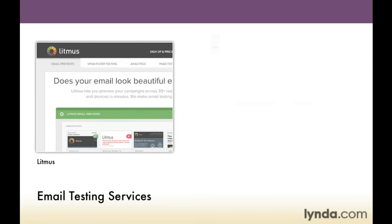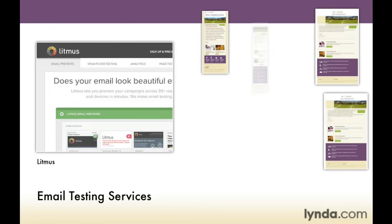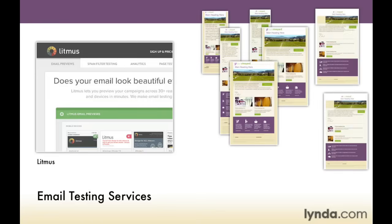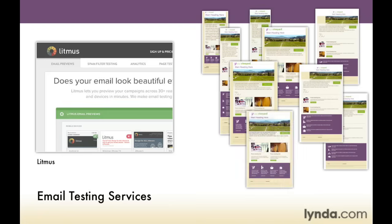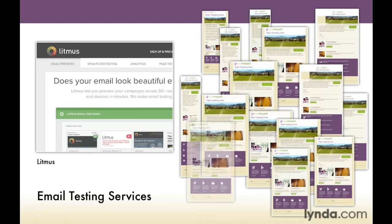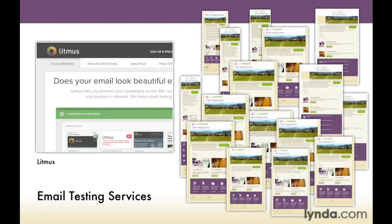All of these are paid services, but if you're using a service like ConstantContact or CampaignMonitor, for example, they have built-in testing services as well. Litmus has the ability to show us screenshots from 34 of the most popular email clients, and we get a live representation on the website of how our email is rendering through all of these individual email clients.